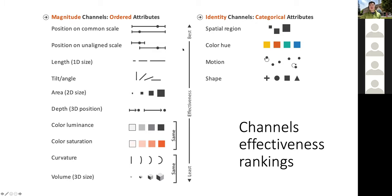On the categorical side, we have attributes that are good for representing categorical values. The most effective one is spatial region, followed by color, motion, and shape.